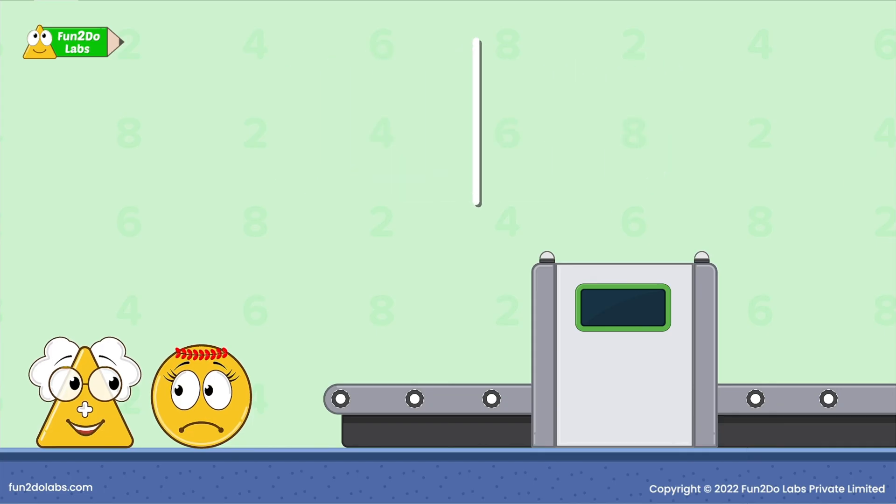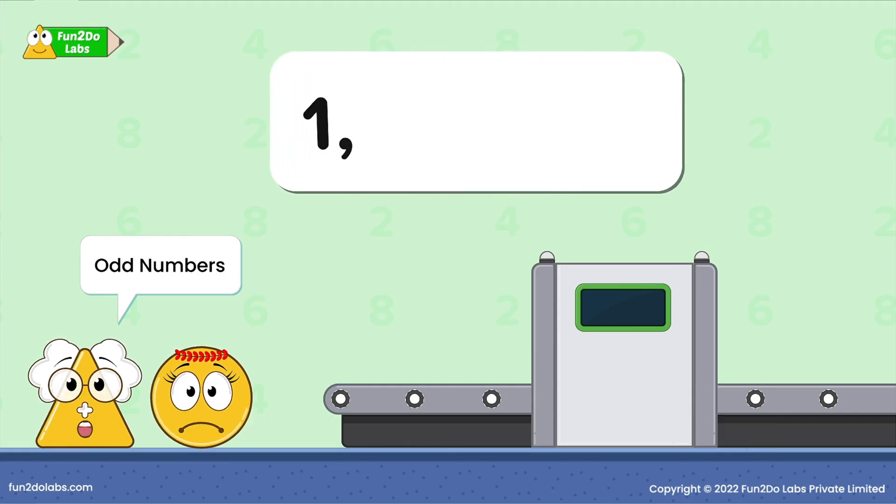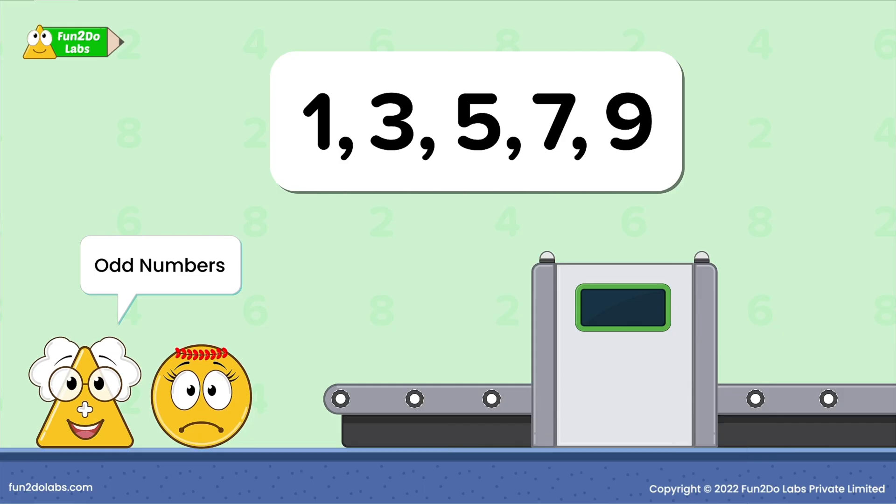The numbers which cannot be divided into groups of two are called odd numbers. For example, one, three, five, seven, nine are odd numbers.